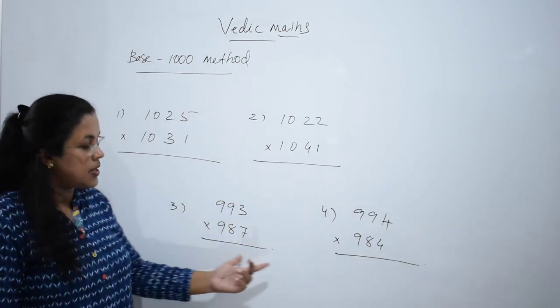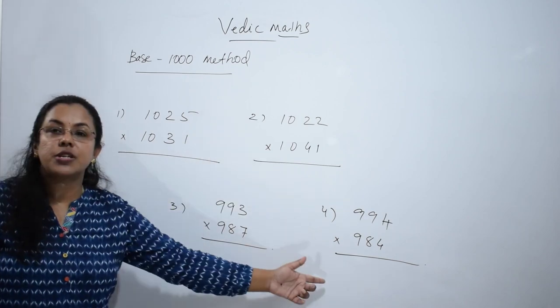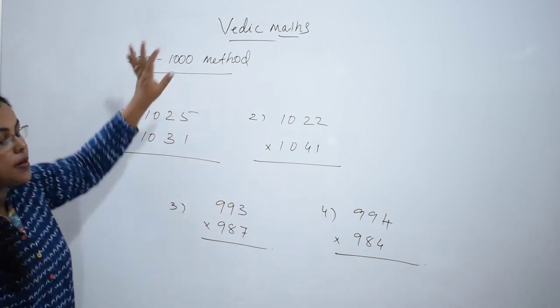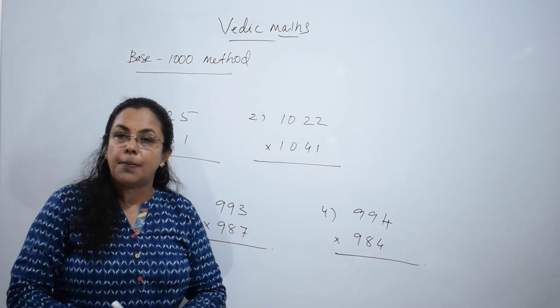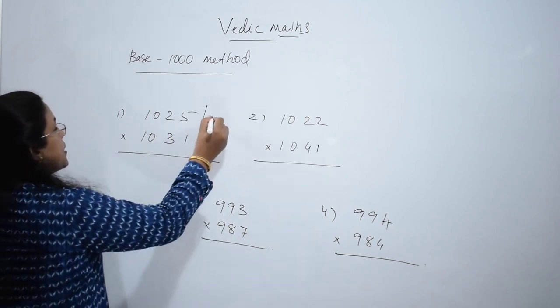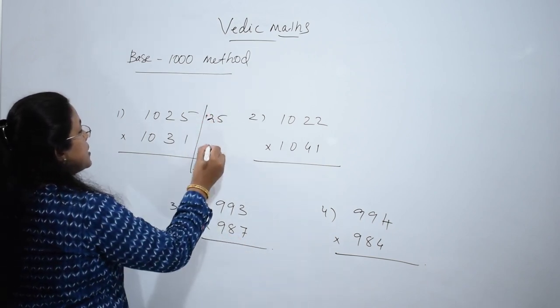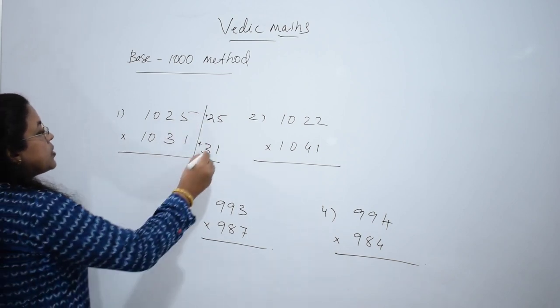Let us practice some questions together. Look at the 4 questions. First one, both the numbers are above 1000. This is also both the numbers above 1000. First of all, write the deviations: 25 greater than 1000, and 31 greater than 1000. The first step: multiply the two.